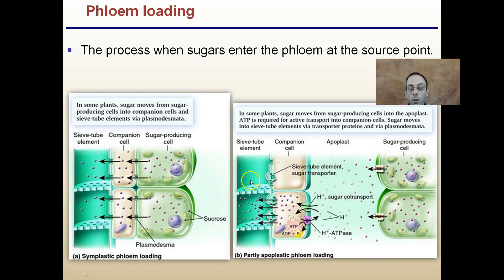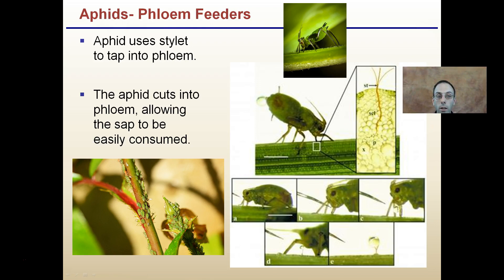Certain insects take advantage of the phloem. Aphids in particular are notorious for using a stylet — a long piercing mouthpart — to tap into the phloem. The aphid cuts into the phloem, allowing sap to easily be consumed. They are specifically trying to consume the sugars within the plant, which is why they have mouthparts that penetrate the phloem. They are what's called phloem feeders.